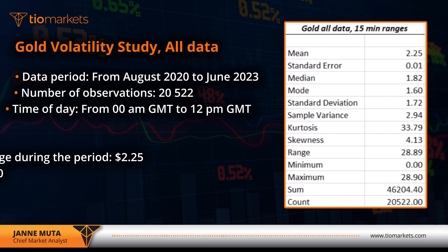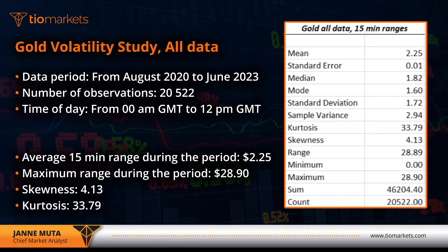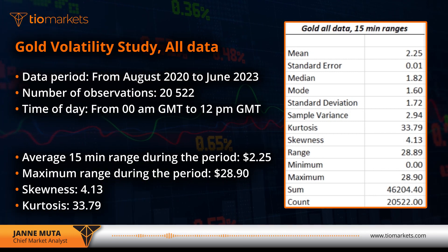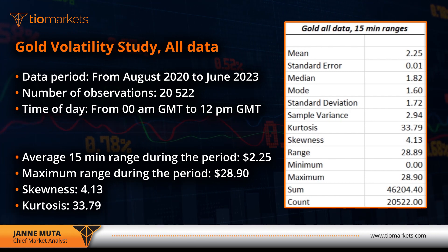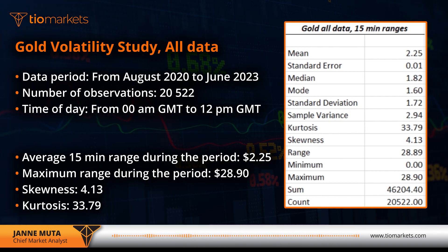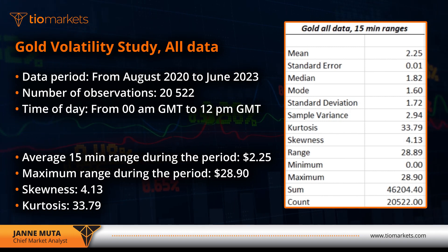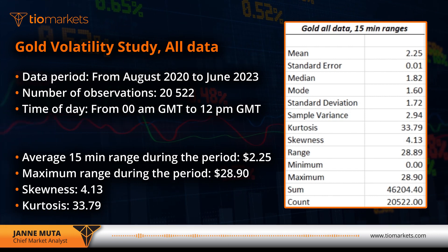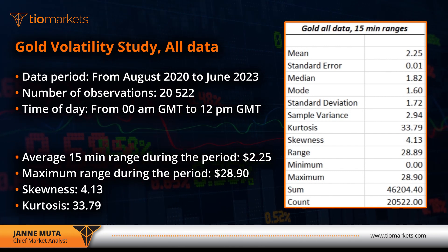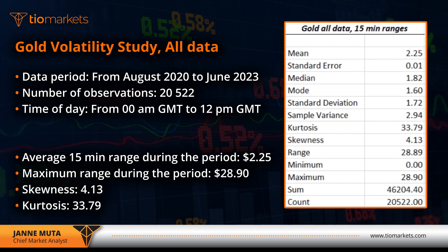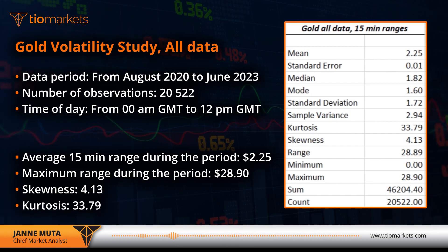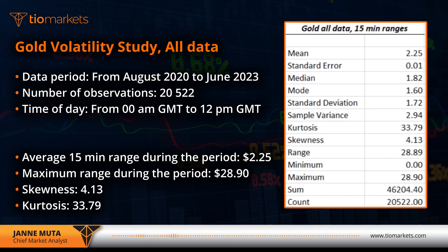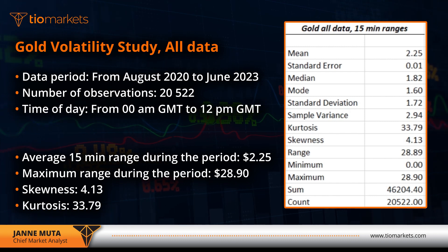Here I have descriptive statistics for all the Gold data. The data period is from August 2020 onwards and covers all of the trading day from midnight to midnight. The average 15-minute range during this period is $2.25 and the maximum is almost $29.